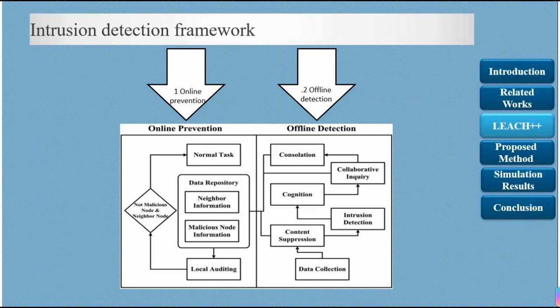In the SD phase, once sensor nodes join a cluster, they send data to their CH after sensing the environment using slotted TDMA. CHs aggregate and deliver data to the base station. The LEACH intrusion detection framework works in two modes: online prevention, which validates advertised CH messages and adds legitimate ones to a CH choices table; and offline detection, which finds nodes trying to become CH in consecutive rounds.